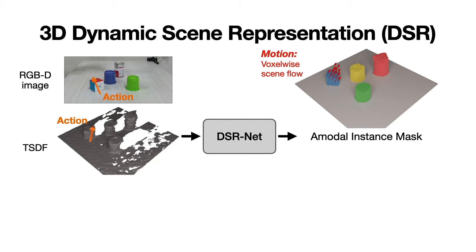the network also infers a 3D amodal object instance mask, where the 3D volumetric mask encodes the object's complete 3D geometry, including occluded regions, and the different colors representing different instances.